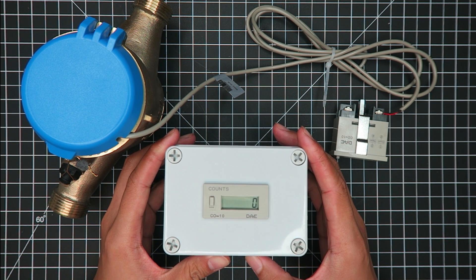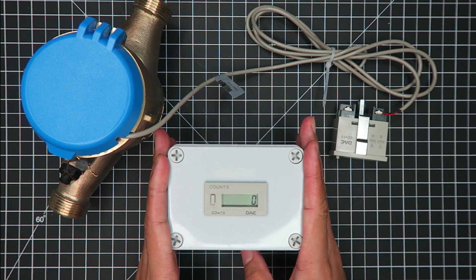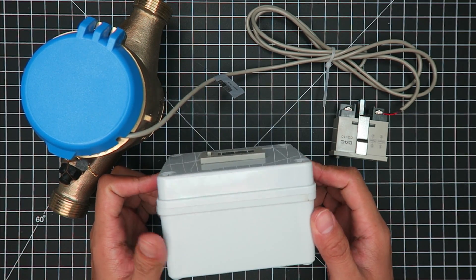If you're working with a solid wall or you don't want to cut a hole in your drywall, you can always purchase the CO-10 kit, which has a mounting housing.